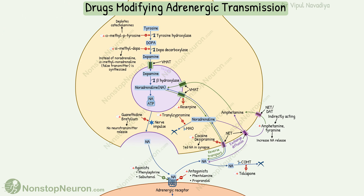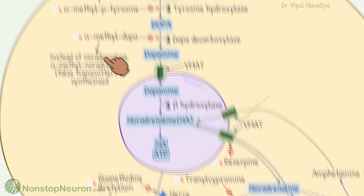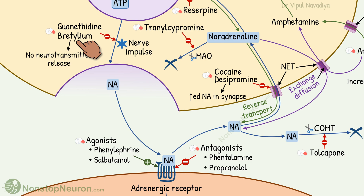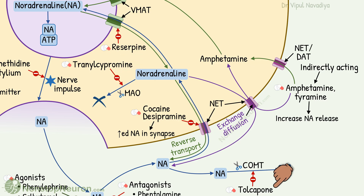These are all the drugs that modulate adrenergic transmission. In summary: alpha-methyl-P-tyrosine inhibits tyrosine hydroxylase; alpha-methyldopa inhibits dopa decarboxylase; guanethidine and bretilium inhibit nerve impulse-coupled release; receptor agonists and antagonists directly stimulate or block the receptors; cocaine and desipramine inhibit axonal reuptake by NET; reserpine inhibits vesicular uptake by VMAT; MAO inhibitors inhibit degradation by MAO; COMT inhibitors inhibit degradation by COMT; and indirectly acting agents increase the release of noradrenaline by displacing it from its storage site, then by reverse transport and exchange diffusion.